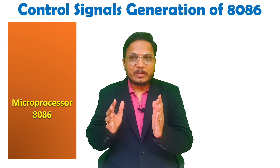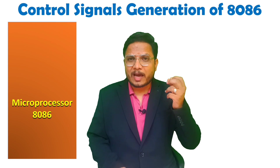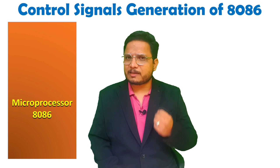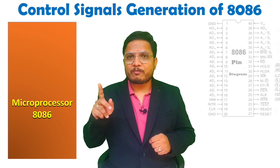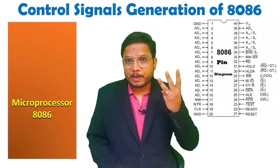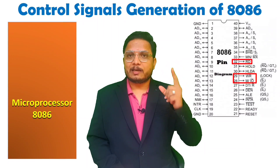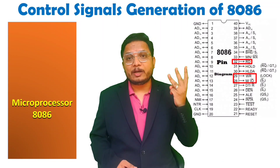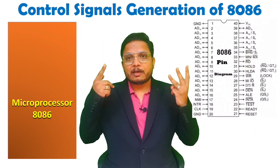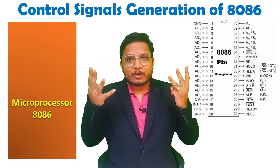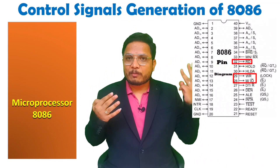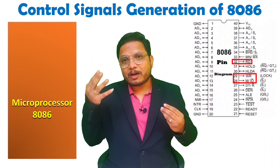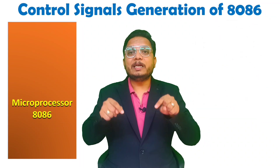Before I explain how to generate control signals, you should ask: why should we generate control signals? If you observe the pin diagram of Microprocessor 8086, it has 3 pins — 4 control signals: Read bar, Write bar, and Memory/IO bar. We want to have 4 control signals — Memory Read, Memory Write, IO Read, and IO Write. The microprocessor has 3 pins but we need 4 control signals, that's why we need to generate them.